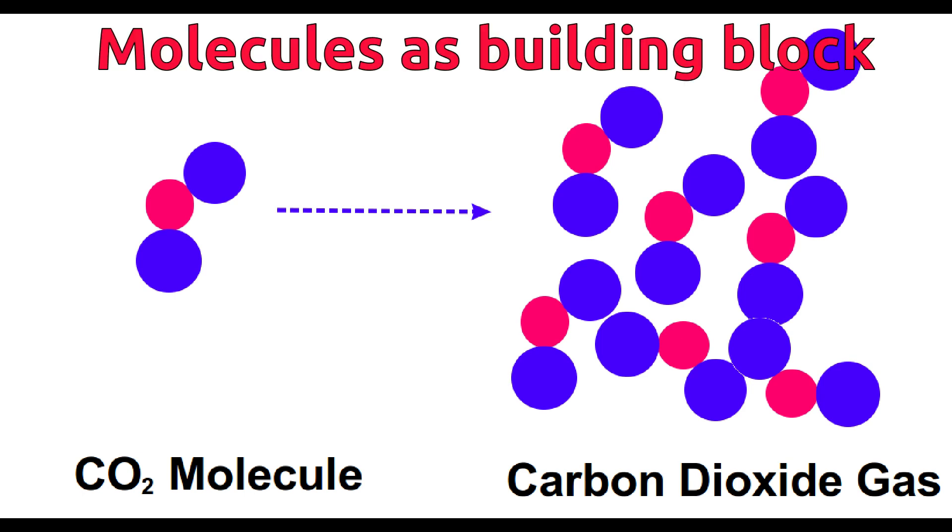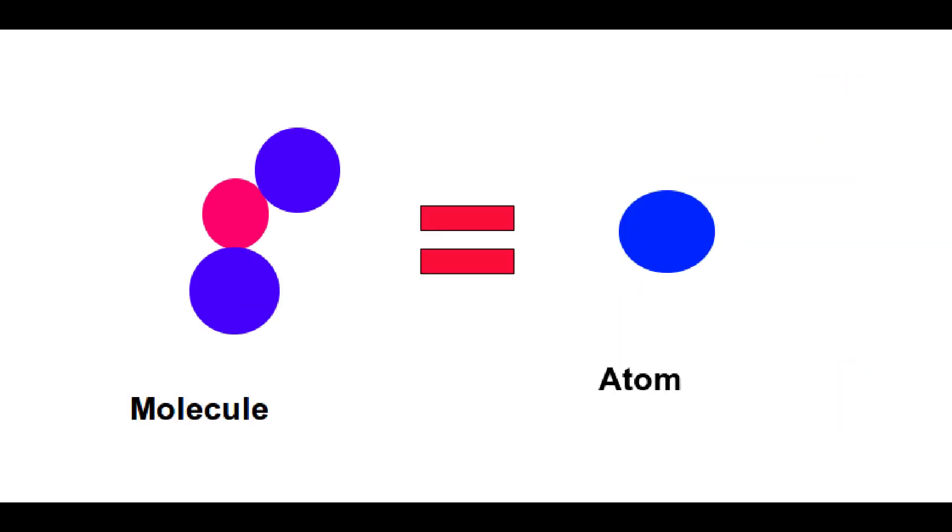But in reality, in some matter, molecules are repeatedly combined to form matter and here building blocks are molecules and not the atom. Dalton's theory was unable to identify molecules and considered molecule and atom the same.